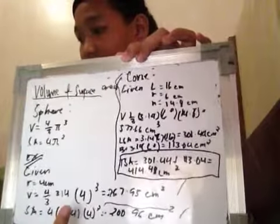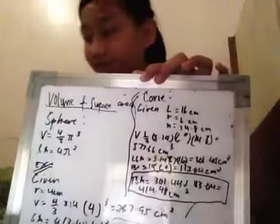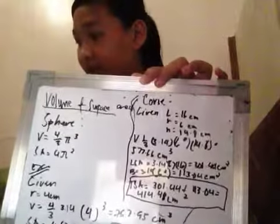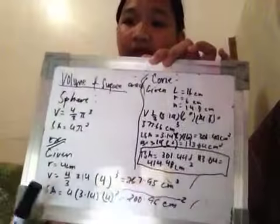Then the 4, tapos the cube sa taas, ang gagawin natin is 4 times 4, then the total is 267.95 cm cubed.